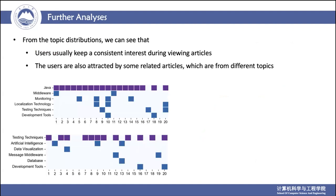As shown in these figures, we further analyze the topic preference distribution of different users based on the articles they have clicked. Generally, both users seem to click on articles about Java and testing technologies, which gives us an idea of their interests. These topics are also related to their skills and roles, supporting the motivation of our SINGLE model. However, they also click on articles about different topics, showing that users have diverse interests. Understanding both regular and spontaneous article click behaviors of users is the key to creating a personalized recommendation system.